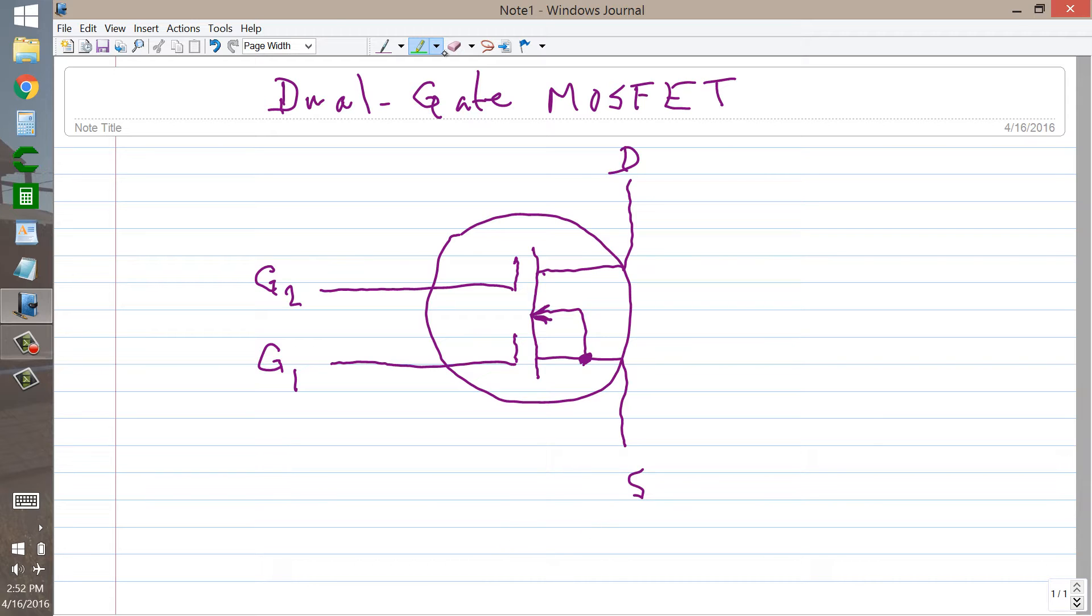Now, here's an example of how you might bias a circuit like this. You connect the source, maybe through a resistor, to your chassis ground. You connect the drain, maybe through an output transformer. Let's just say a coil and capacitor type arrangement like this. Here's your source, here's your output, there's your drain right there, source, drain.